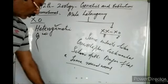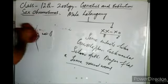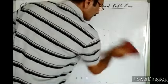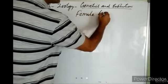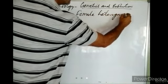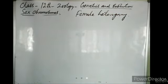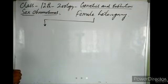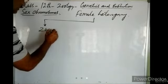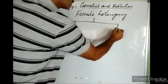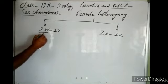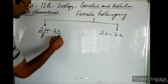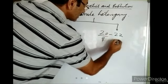Now there is another condition known as female heterogamy. In female heterogamy, there are two conditions: one is known as ZW/ZZ condition, and another is known as Z0/ZZ condition. In ZW/ZZ, ZW is female and ZZ is male. In Z0/ZZ, Z0 is female and ZZ is male.